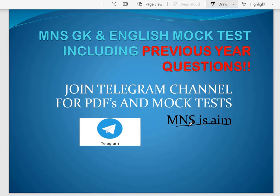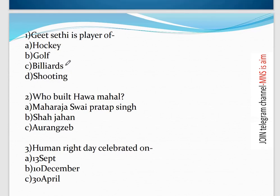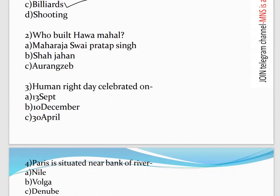The first question is a 'Who am I?' type GK question. The options are Maharana Pratap Singh, Shah Jahan, and Aurangzeb. The correct answer is Maharana Pratap Singh.